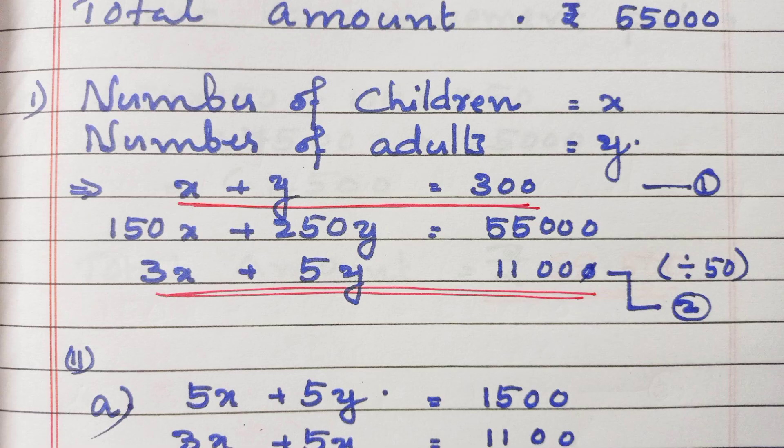Similarly, the amount collected on that day is Rs. 55,000. Therefore, 150X plus 250Y is equal to Rs. 55,000. Cancelling by 50, we get 3X plus 5Y is equal to 1,100. Now we have two equations.